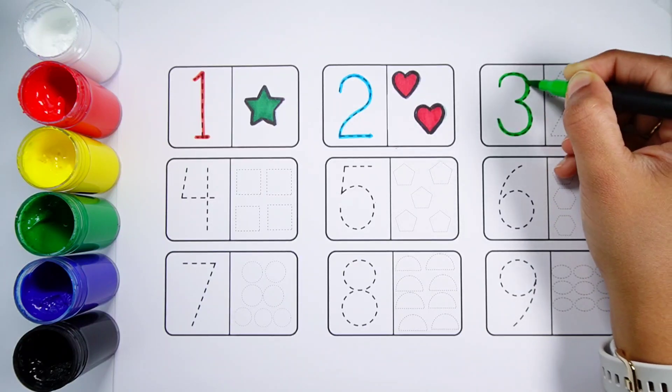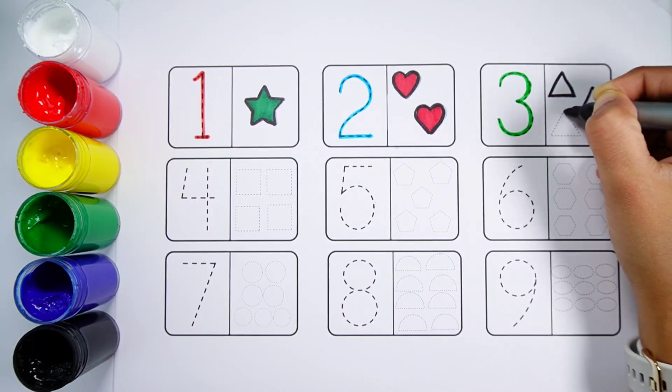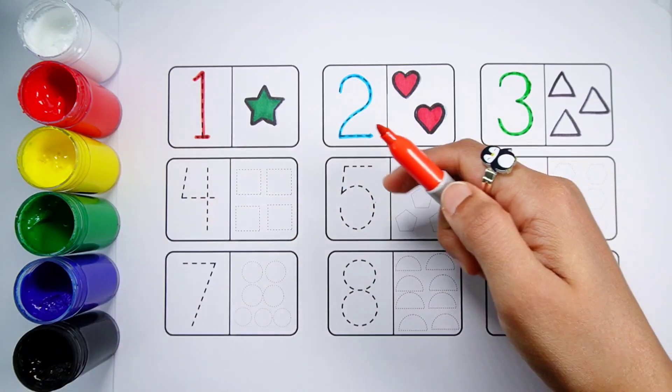Number 3. One, Two, Three. Three triangles. Orange Color.